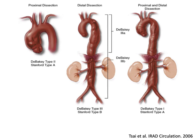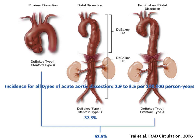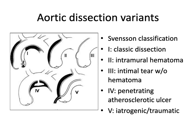Distal aortic dissection — basically we're talking about everything that Stanford type B comprises, which is only about a third of total aortic dissection. Stanford type B is also known as DeBakey type III, subdivided into 3A, which is only thoracic, and 3B, which is thoracoabdominal. Remember, classifications are always easy test questions. The different aortic dissection variants: type I is your classic dissection with a profuse true and false lumen. What's increasingly a matter of discussion is intramural hematoma and penetrating atherosclerotic ulcers, also known as PAUs.